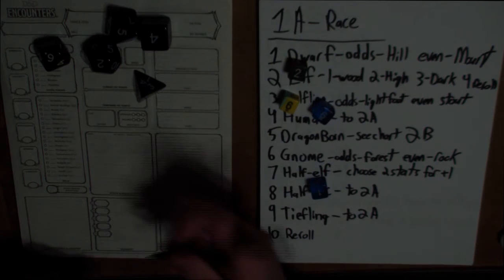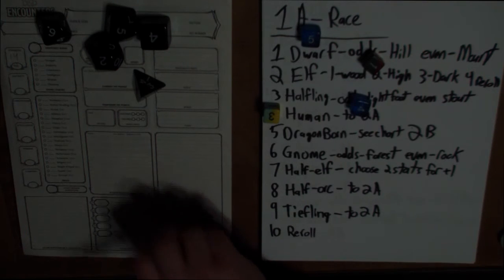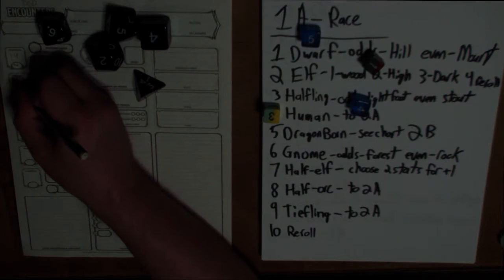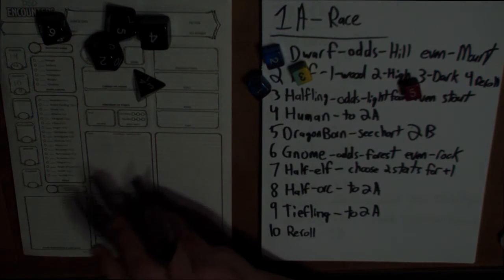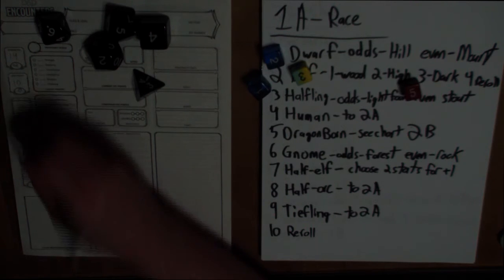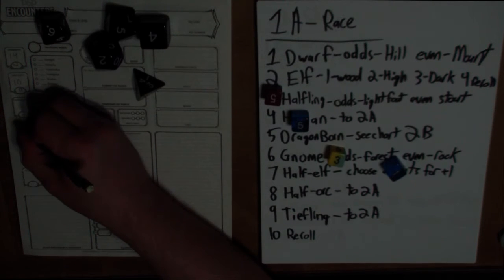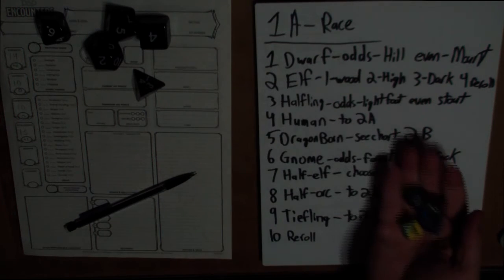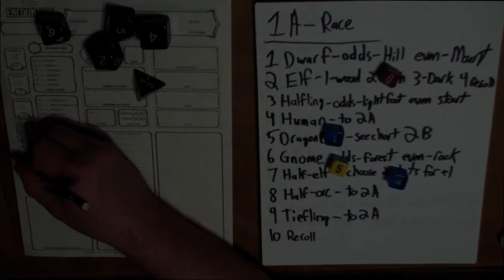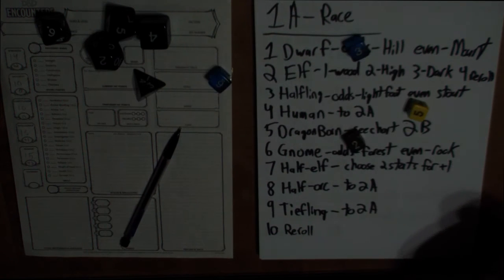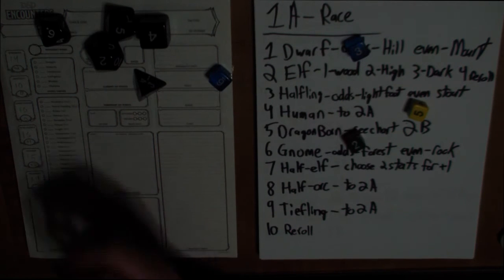We've got a 14 for strength, which gives us a plus 2 bonus. Then we have a 10 for dexterity — that's a 0. Then a 10 for constitution, also a 0. The way it's turning out, I really hope I get fighter. We have a 13 for intelligence — wizard wouldn't be too bad either. Then a 15 for wisdom, so cleric actually looks like it'd be the best at this point. And a 14 for charisma. So as long as it doesn't rely on getting hit, we're good.